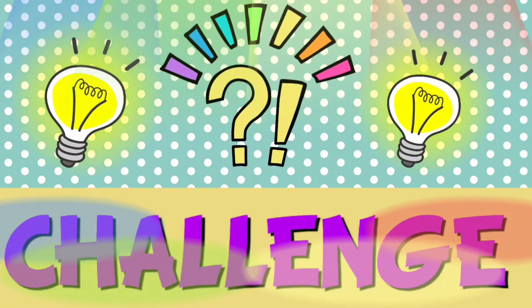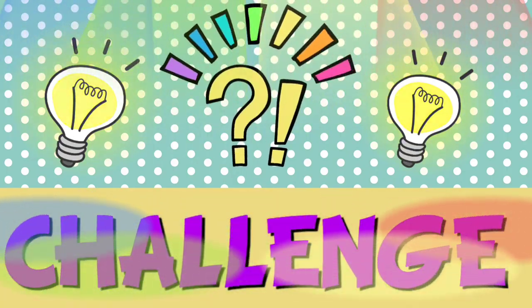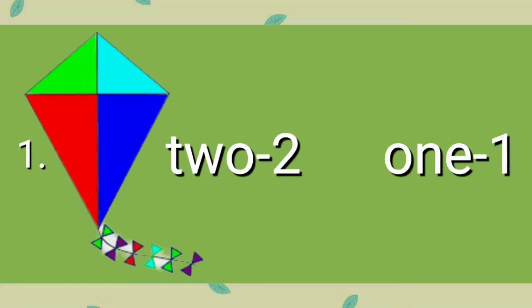Kids, I have a challenge for you. Count the objects, and encircle the correct answer. How many kites do you see? Right. One.